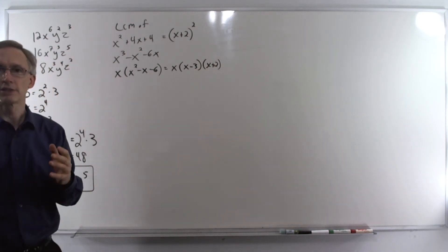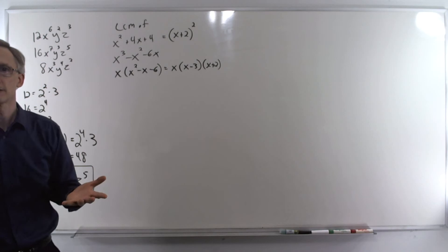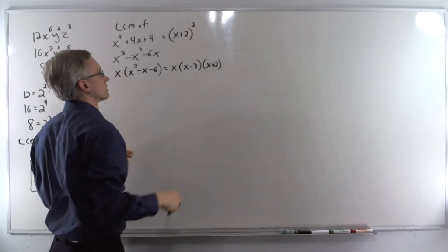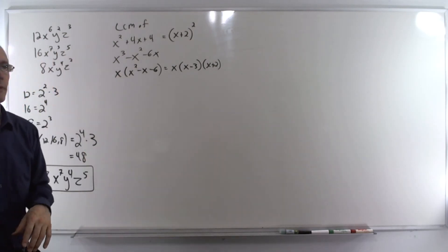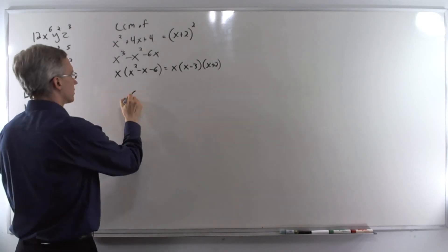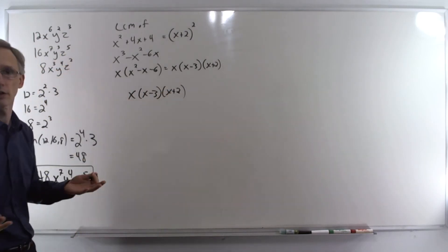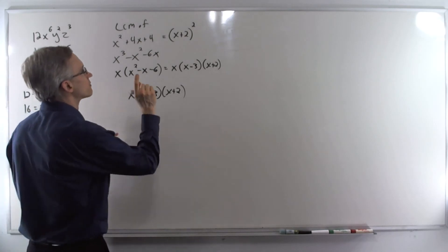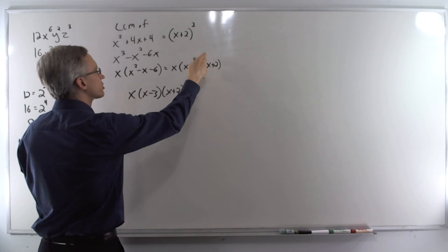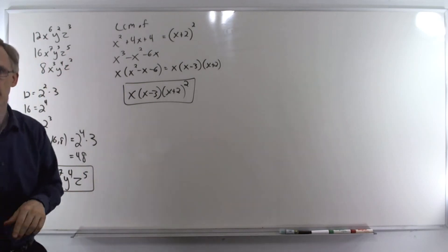The ideas we've been using also apply to binomials — we're just going to select the one with the largest exponent. These are a base just like anything else. We have three unique bases here: x, (x - 3), and (x + 2). Go through and select the largest exponent for each one. x just has exponent 1, x minus 3 just 1, and for (x + 2) we have two of them, so the larger exponent is 2. So the LCM is x(x - 3)(x + 2)².